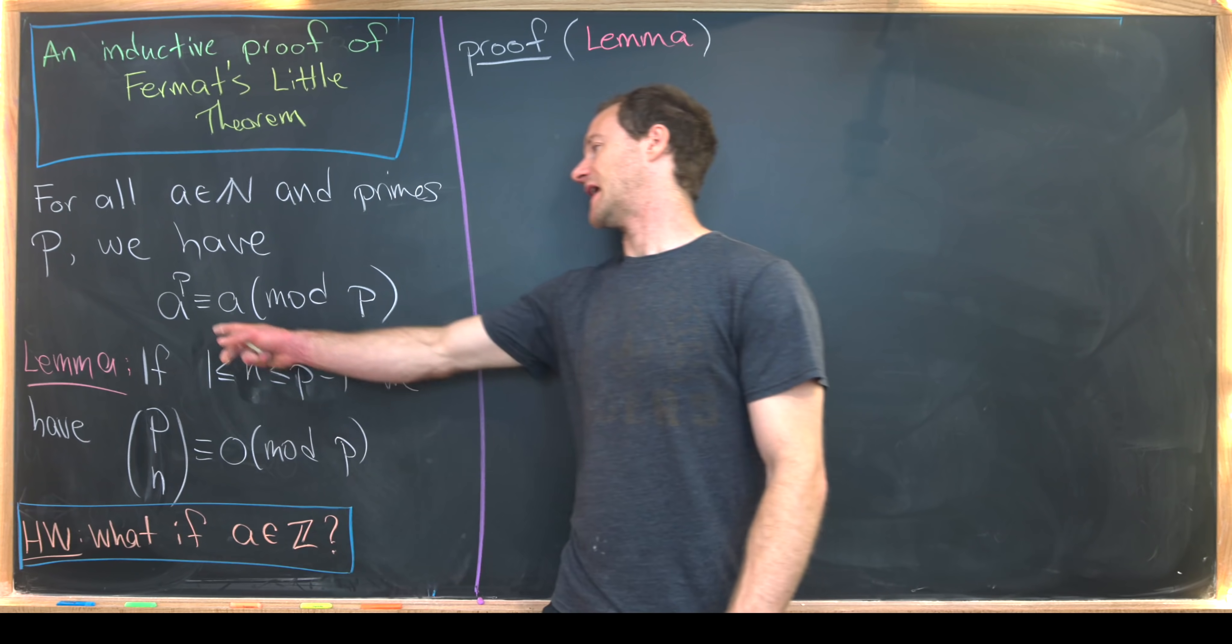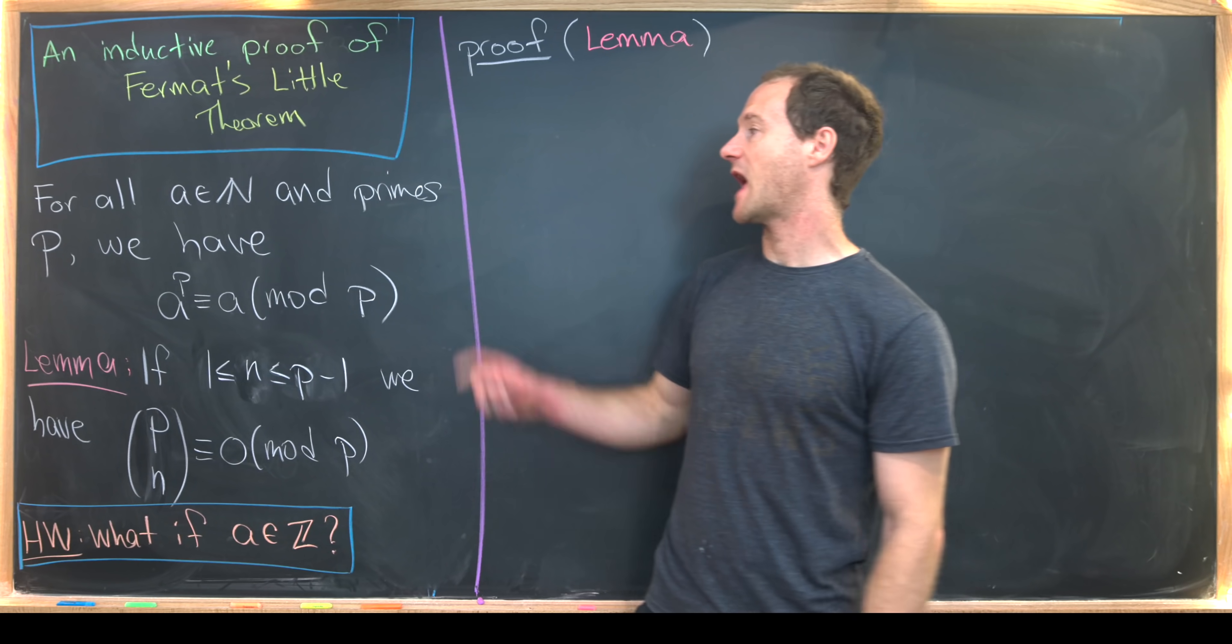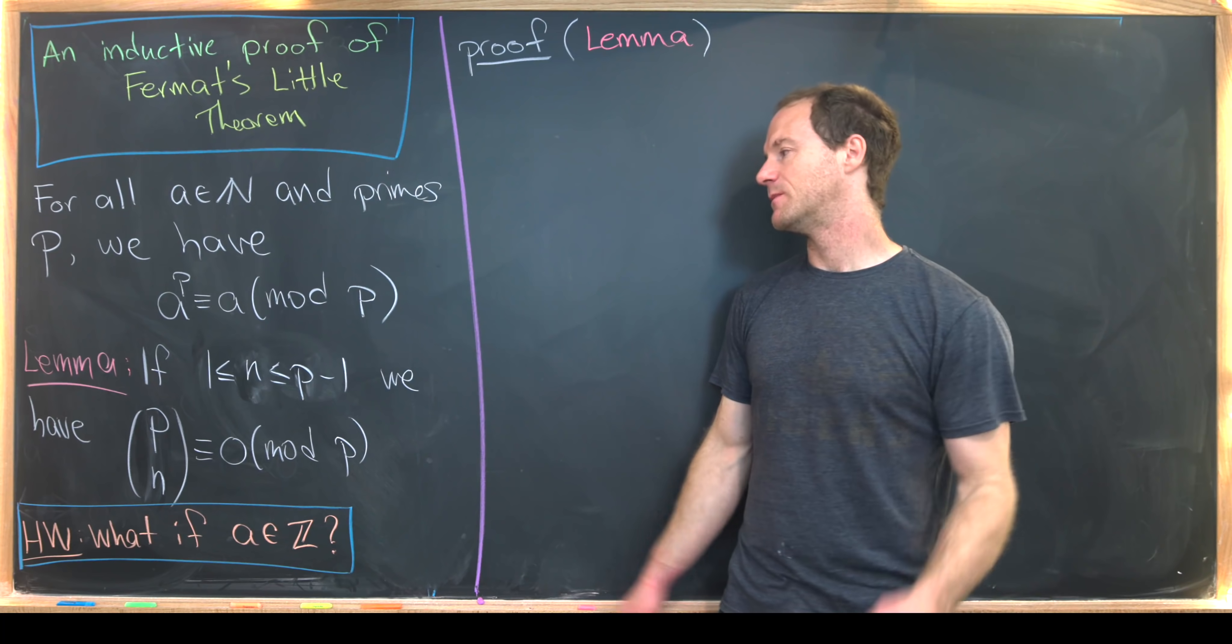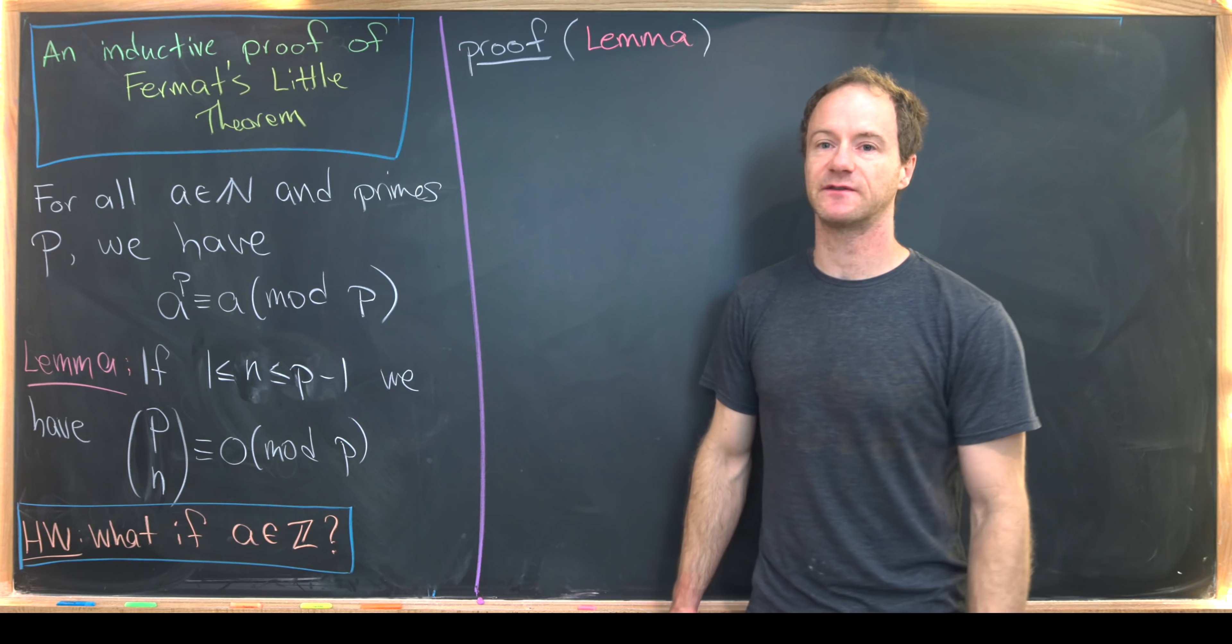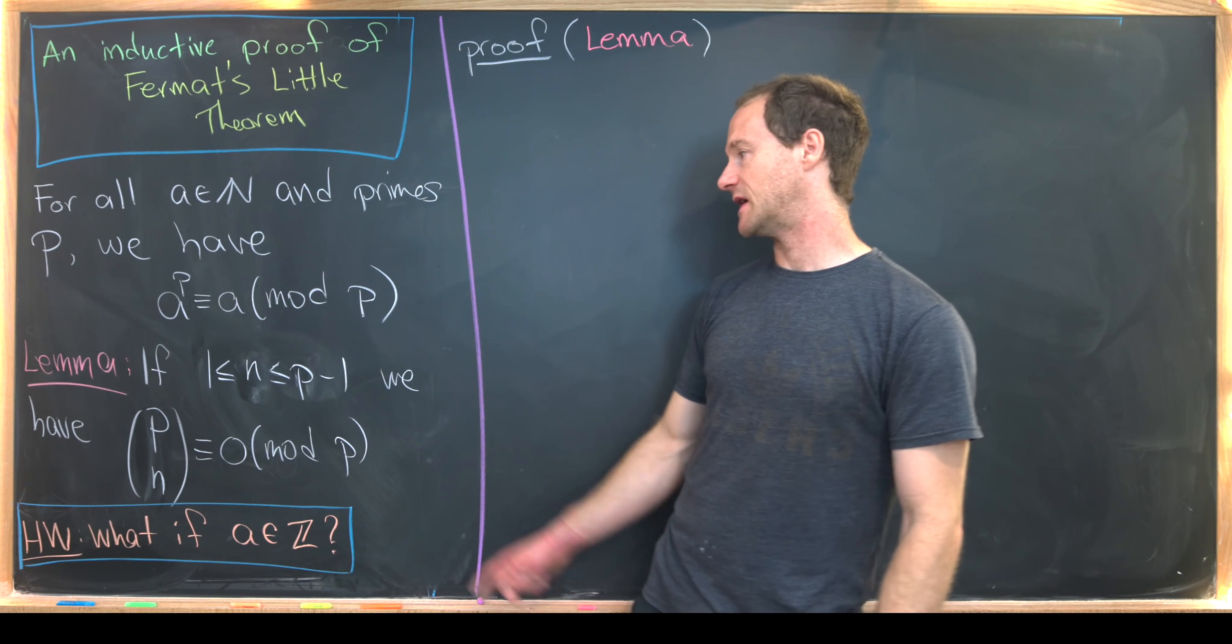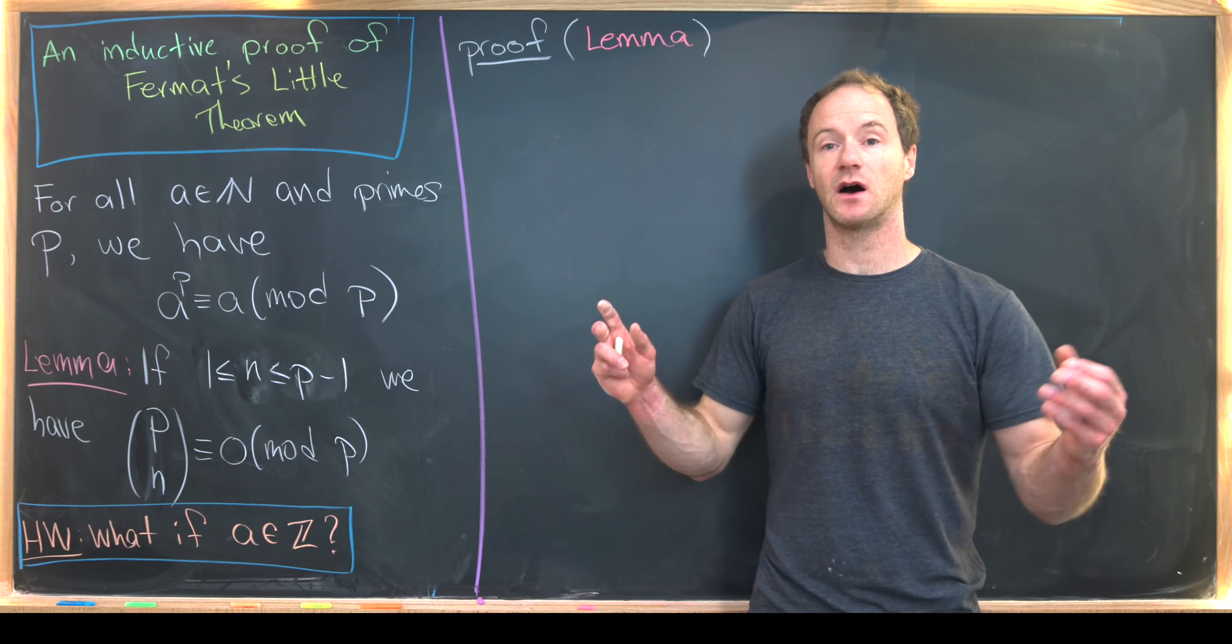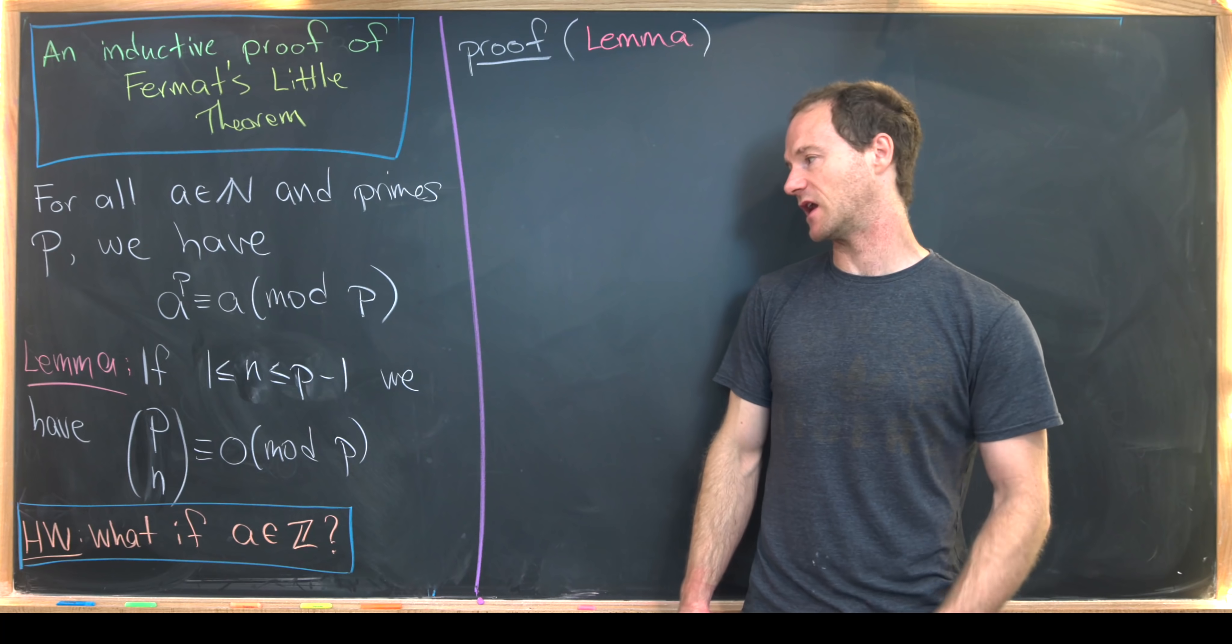Sometimes it's written as A to the P minus 1 is congruent to 1 mod P, if A is not divisible by P. But that actually extends very easily from this as well. Notice if A is not divisible by P, it has an inverse mod P, then we can just multiply both sides of this congruence by A inverse, and we get that other version.